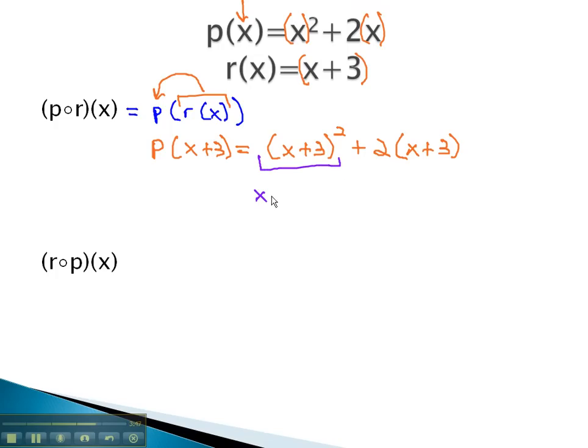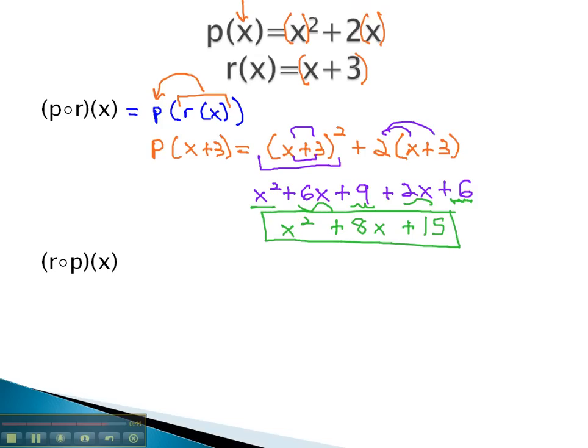Squaring will give us x squared, the product twice, 3x and 3x is 6x, and 3 squared is 9. Distributing gives us 2x plus 6, and then we can finish by combining like terms to get x squared plus 8x plus 15 for our function p∘r(x). In other words, we stick the r(x) into the p function.